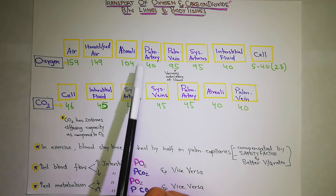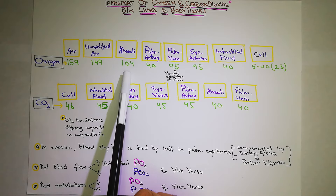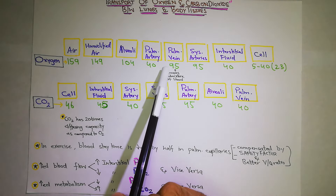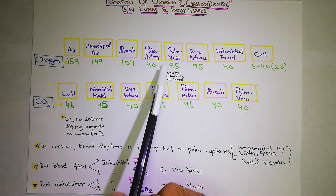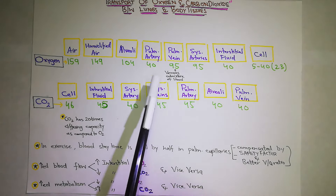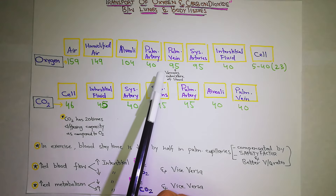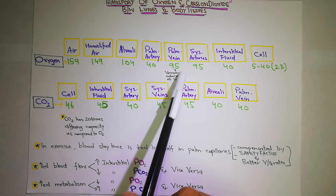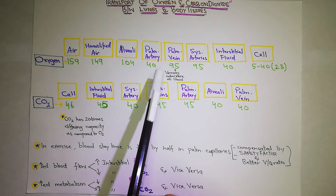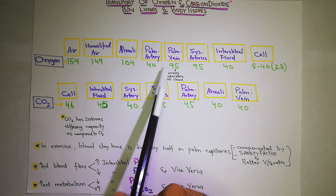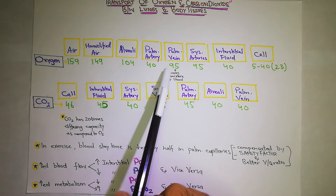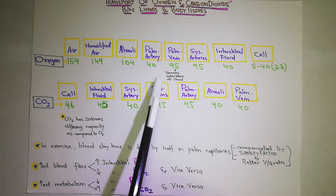Pulmonary artery سے 40 کا آیا، pulmonary capillaries میں 104 ہوا کیونکہ alveoli کا 104 partial pressure تھا اس نے اپنی ساری oxygen اس کے اندر ڈال دی۔ تو یہ pulmonary vein میں 95 کیوں ہو گیا؟ دوبارہ 104 سے کم ہو کے 95 کیوں ہو گیا؟ وہ اس لیے ہو گیا کیونکہ یہاں پر اس کے ساتھ تھوڑا سا venous blood mix ہو جاتا ہے - یعنی کہ pulmonary vein کے اندر venous admixture of blood ہوتا ہے۔